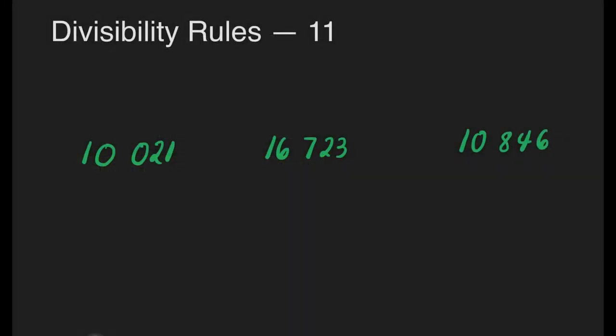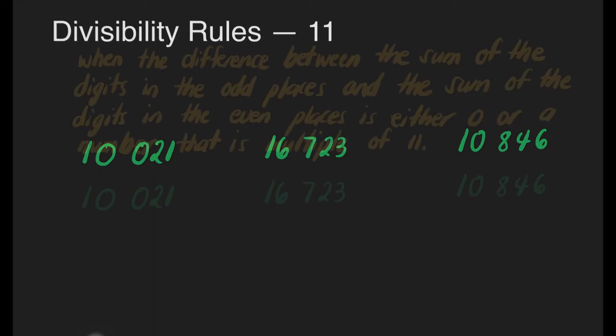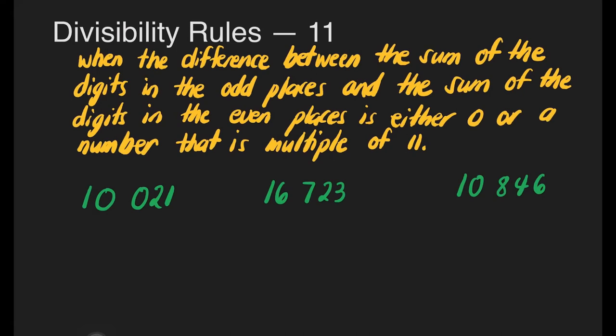Now let's move on to divisibility rules for 11. Which of these numbers is divisible by 11? A number is divisible by 11 when the difference between the sum of the digits in the odd places and the sum of the digits in the even places is either 0 or a number that is a multiple of 11.